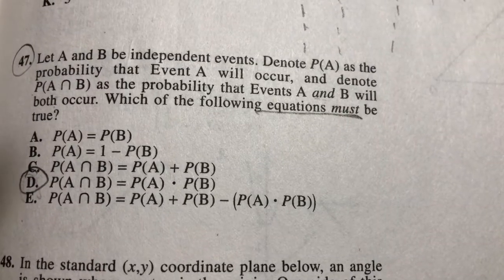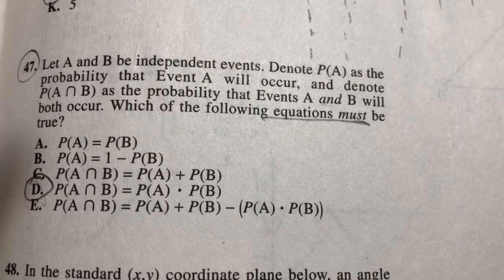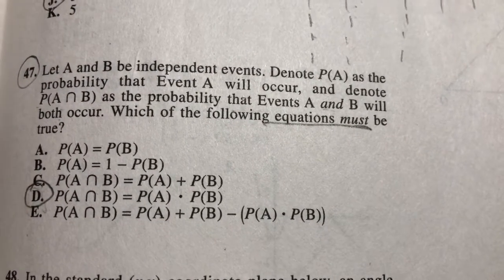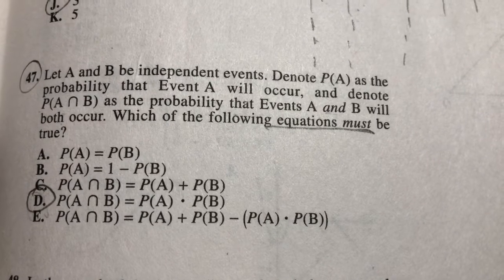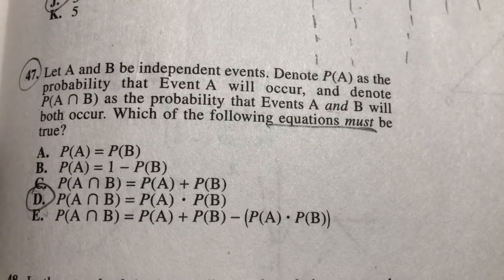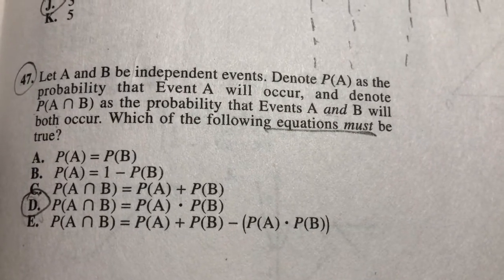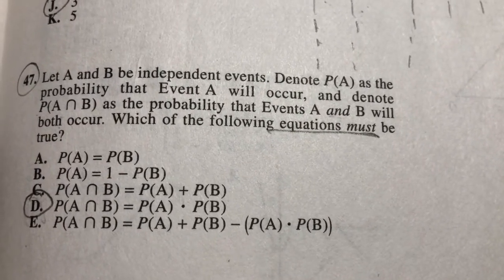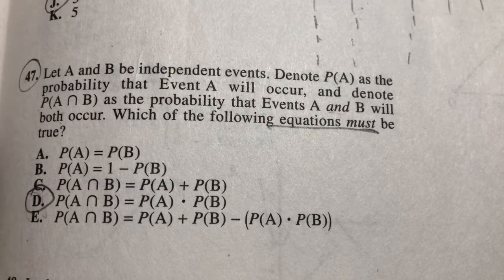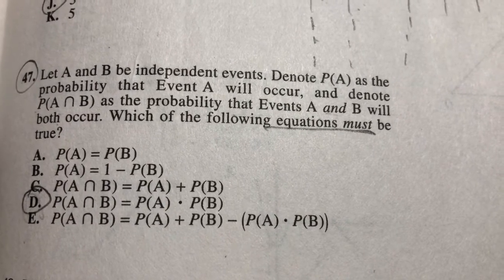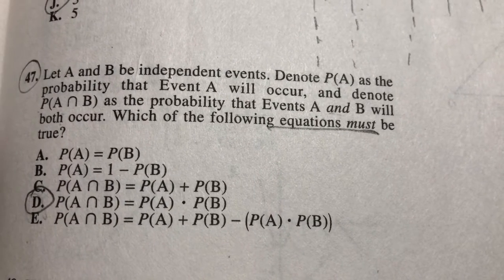It's in the official ACT prep book on page 353, question number 47 — one of the harder ones. The answer has to be D because of the equation I just gave you: the probability of A and B occurring is the probability of A occurring times the probability of B occurring.